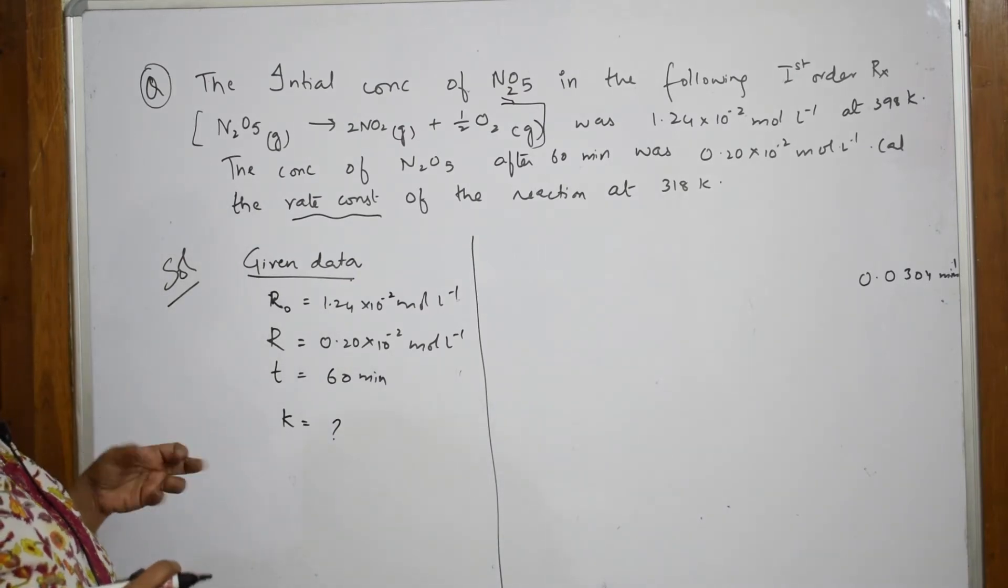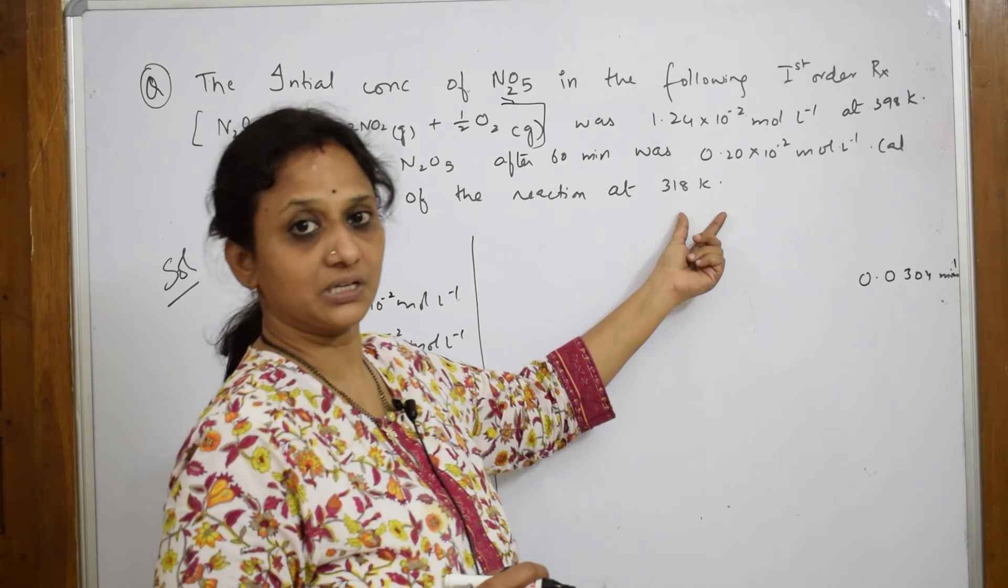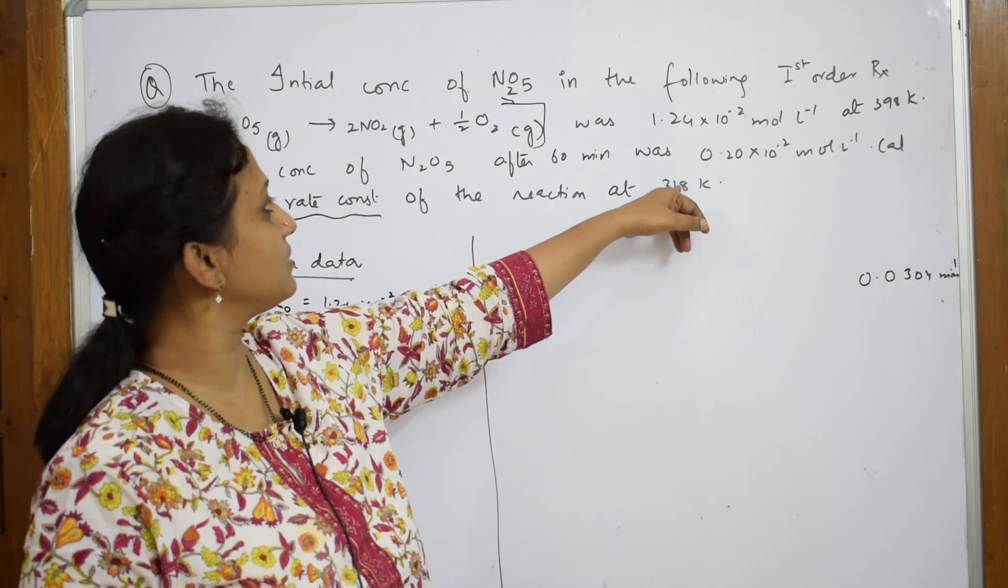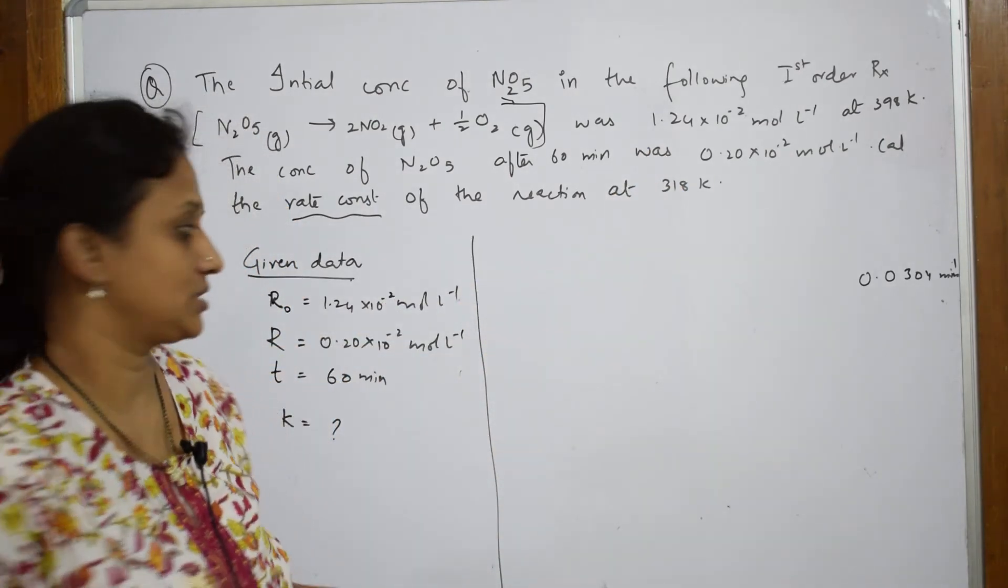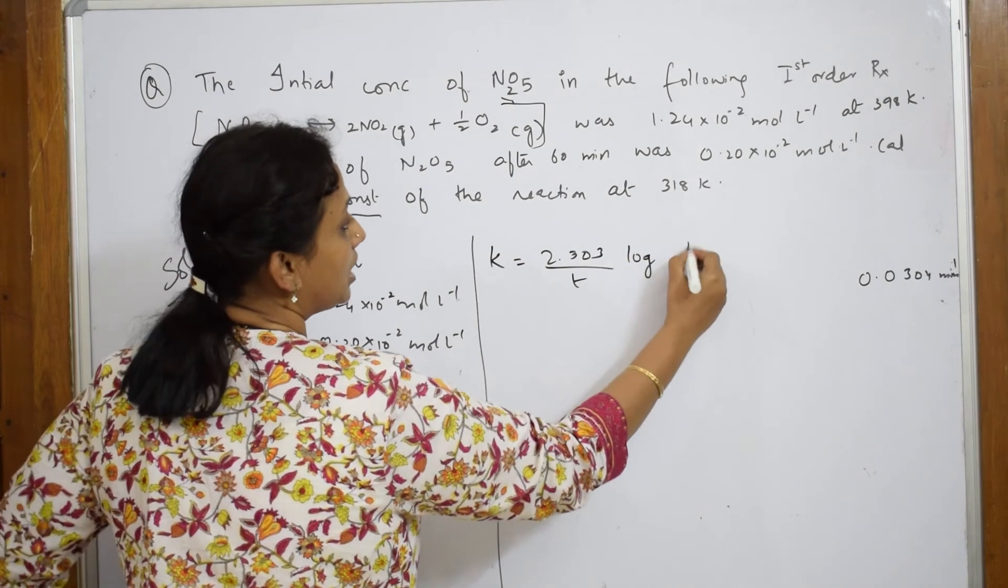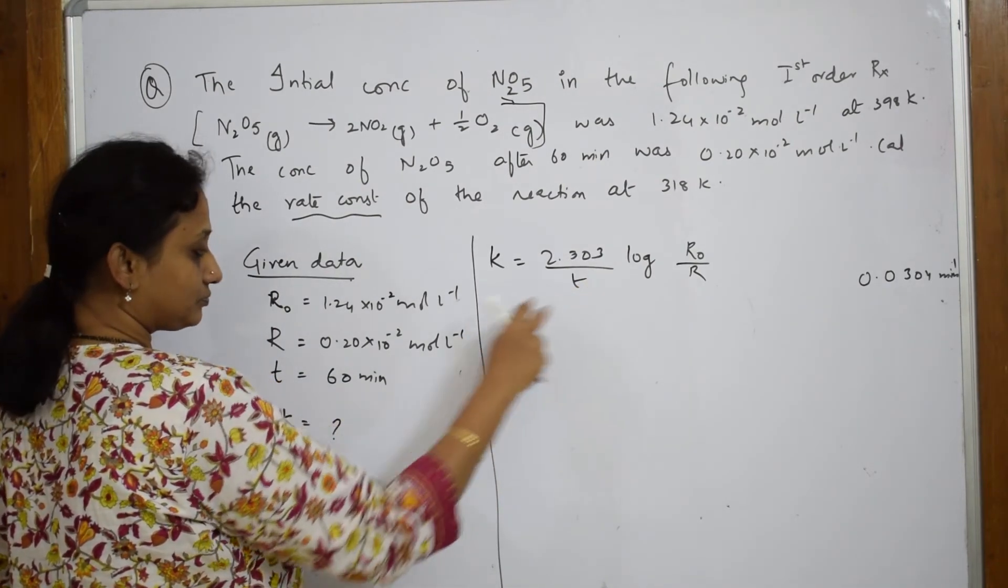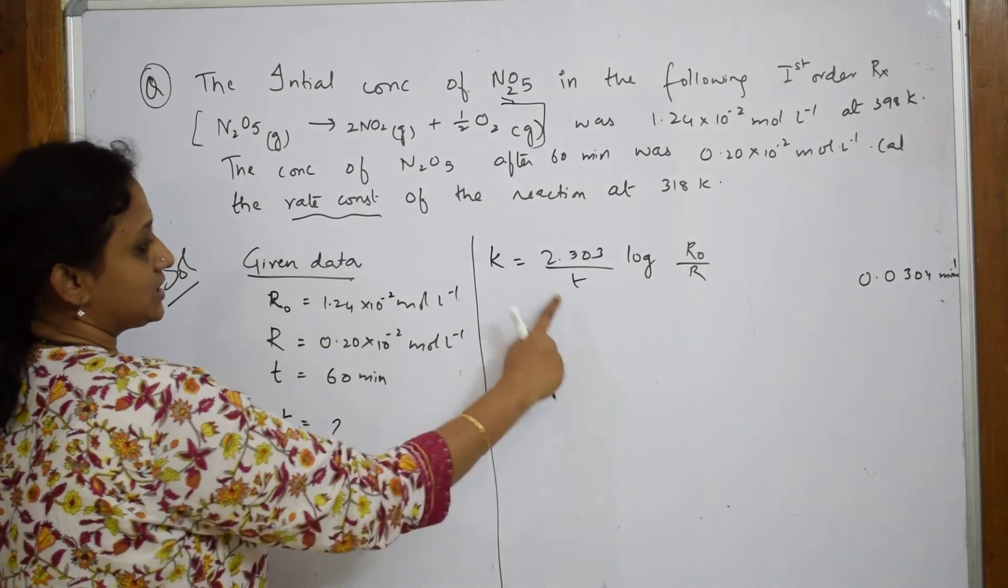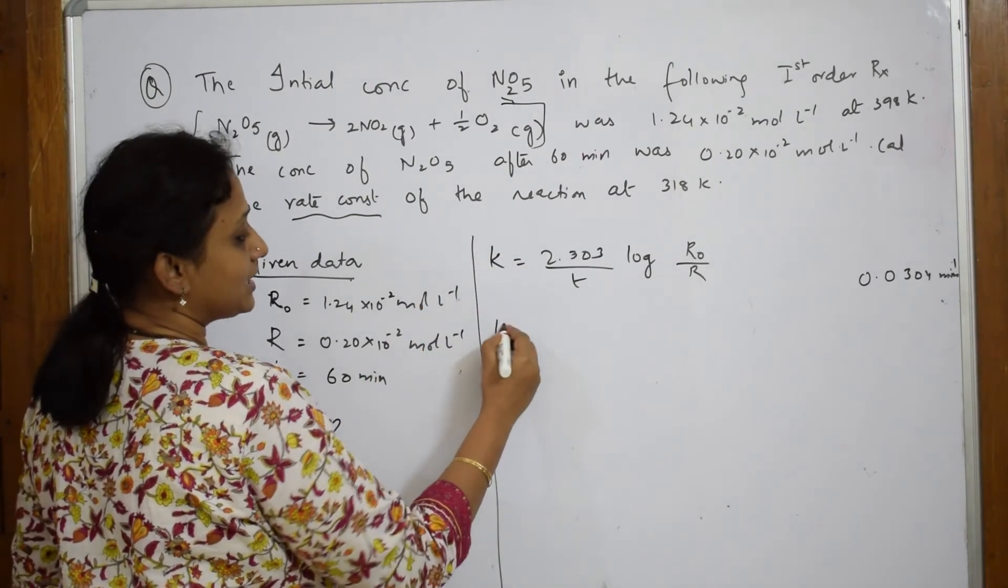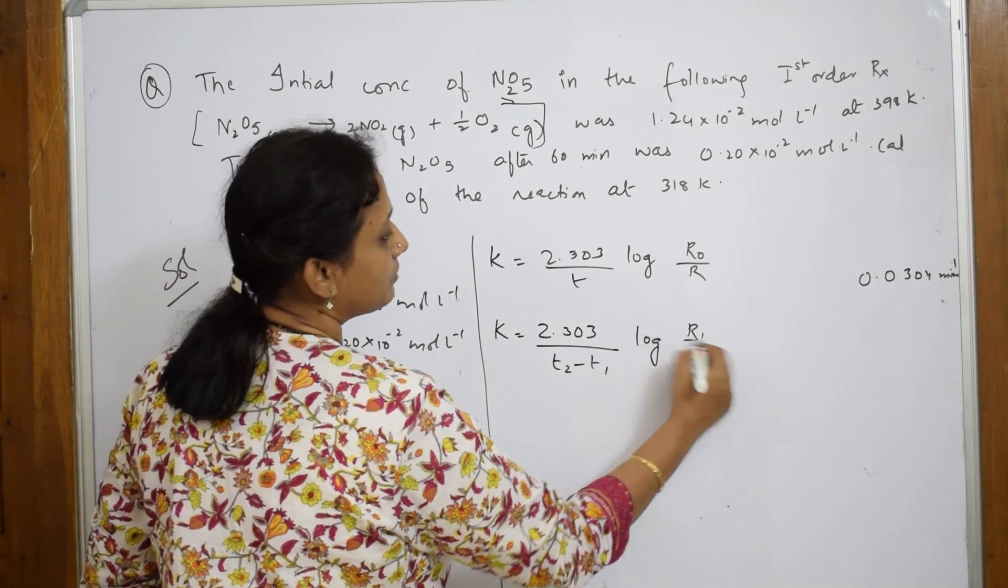What is the question asking us to solve? We have to find out the rate constant at a different temperature. This is one temperature given to us. They want us to find out the change in that particular rate constant. What should I do? First, I say k is equal to 2.303 by T log R₀ by R. This is your basic first order rate. They have given me a variation in time, that is 60 minutes later. After 60 minutes, so much has decomposed. So the same formula I can write it as 2.303 by T₂ minus T₁ log R₁ by R₂.